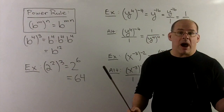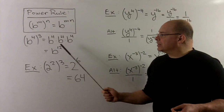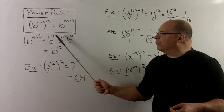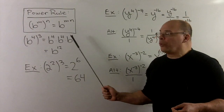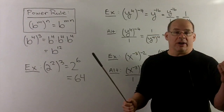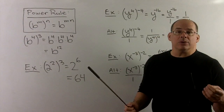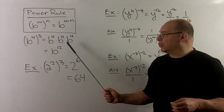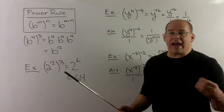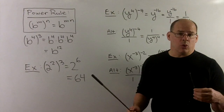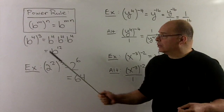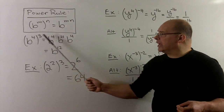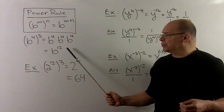The product rule says to add the exponents, so that's going to be four plus four plus four. We have three of those, so that's three times four, which is twelve. And that's the rule in effect — four times three just goes to twelve.